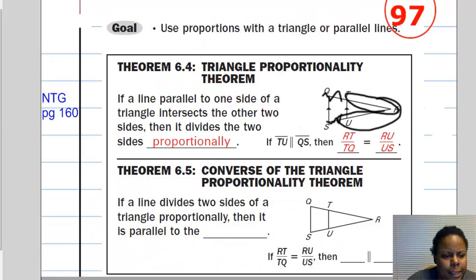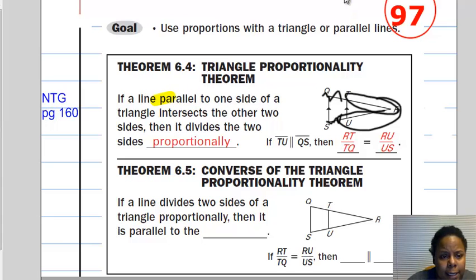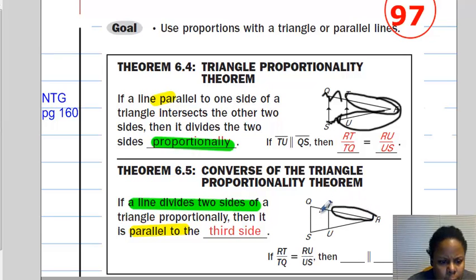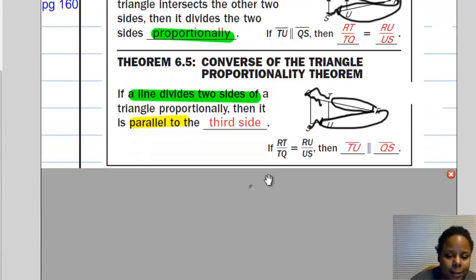The converse of this, which is the reverse, instead of starting off with a pair of parallel lines and then ending with the fact that it divides the two sides proportionally, we start off with, if it divides the two sides proportionally, then it is parallel to the third side. As we can see here, in this case, since RT over TQ is equal to the same ratio of RU over US, then that must mean that we have some parallel lines occurring, which have to be TU and QS. Very cool. At least I think it's cool.